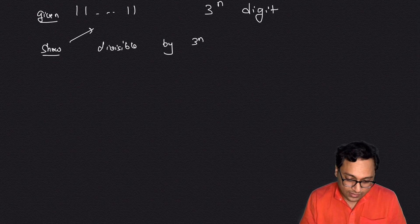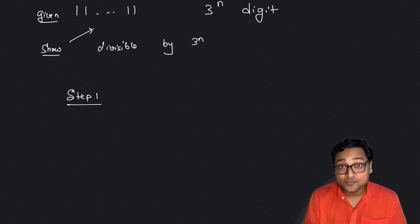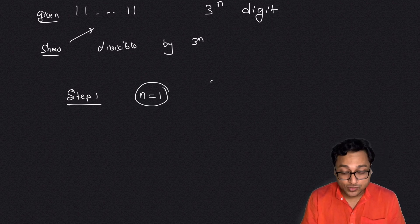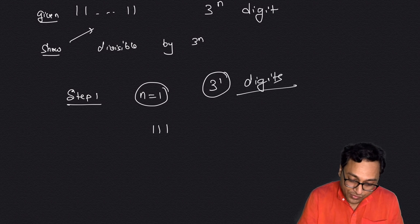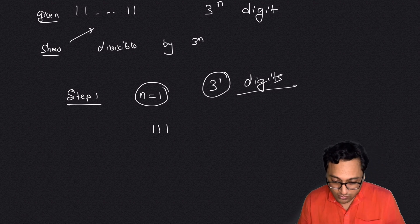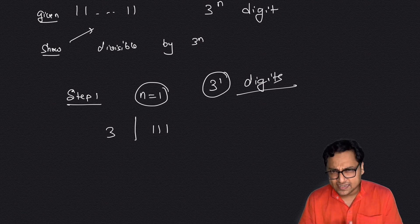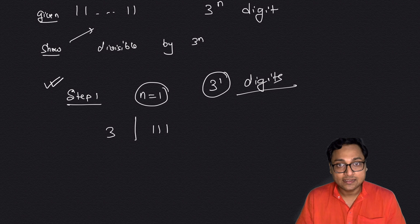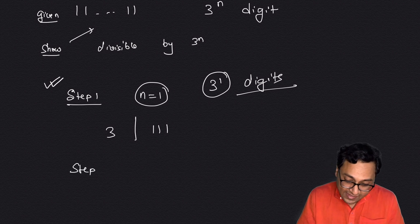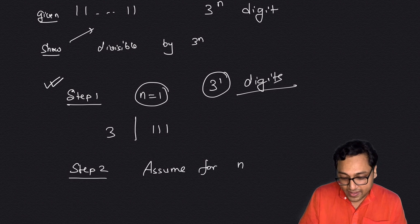Step 1 is the base case: for n equals 1, you have 3-to-the-power-1 digits, which means you have three 1s — the number 111. You want to know whether it's divisible by 3. You can just divide and check: it is divisible by 3. So step 1 is done.